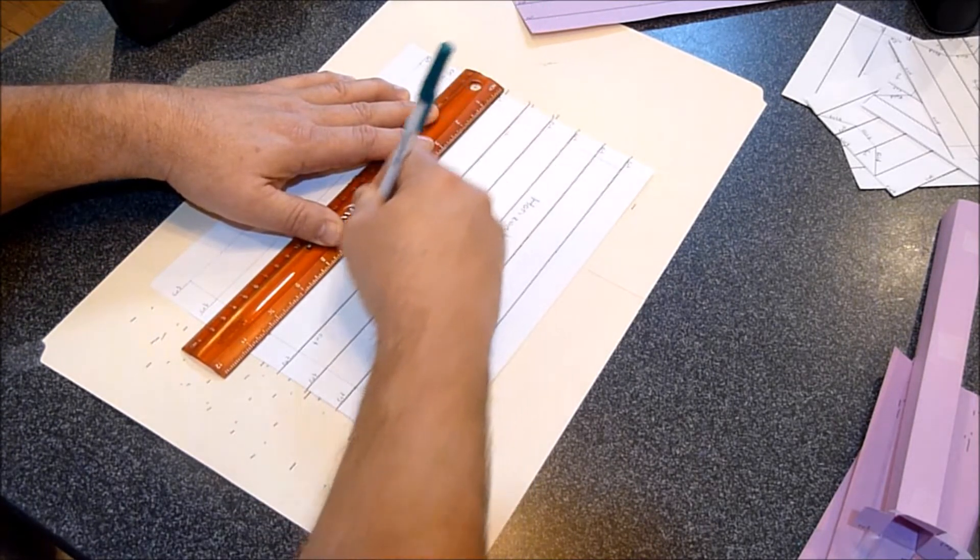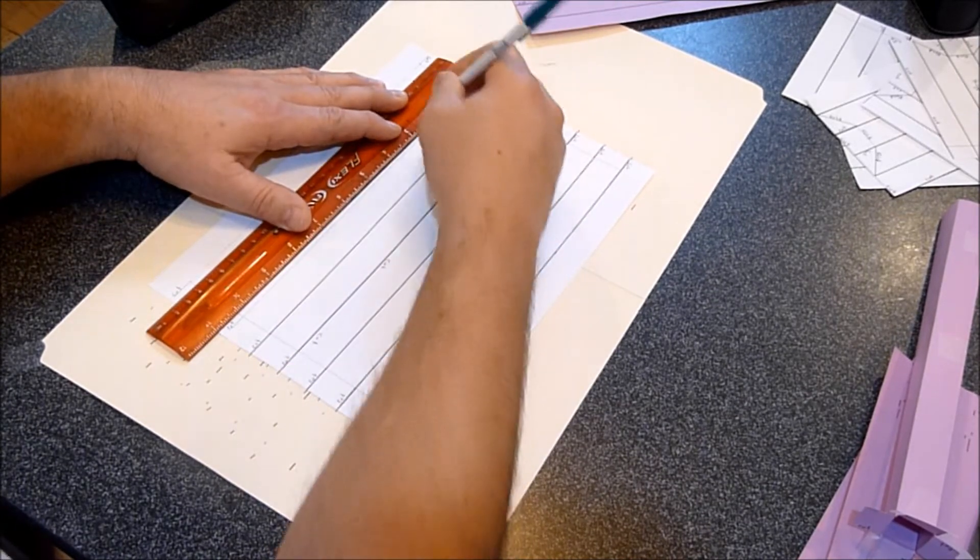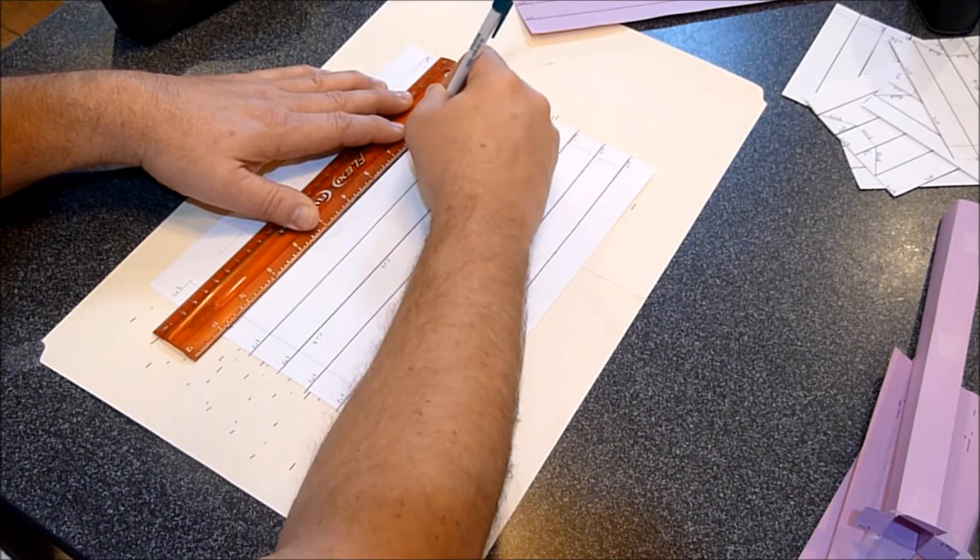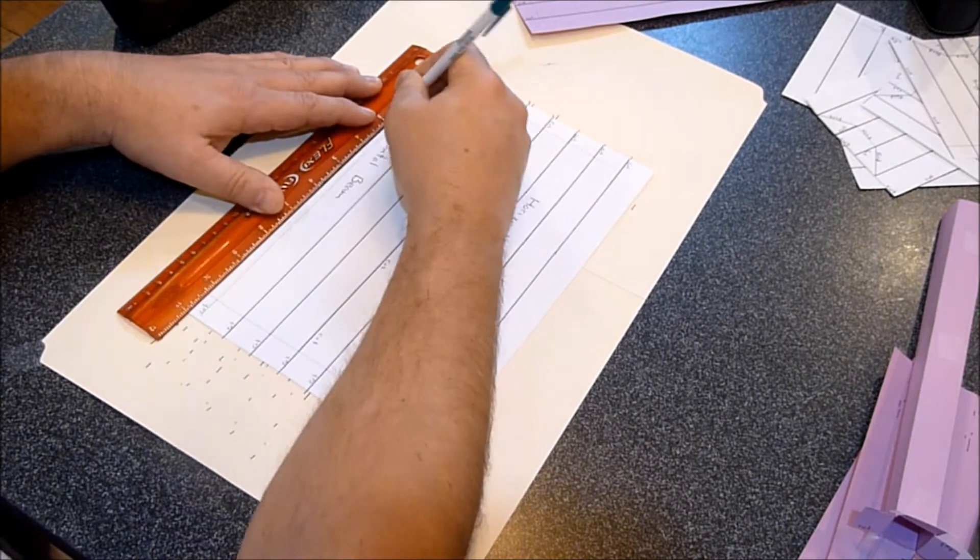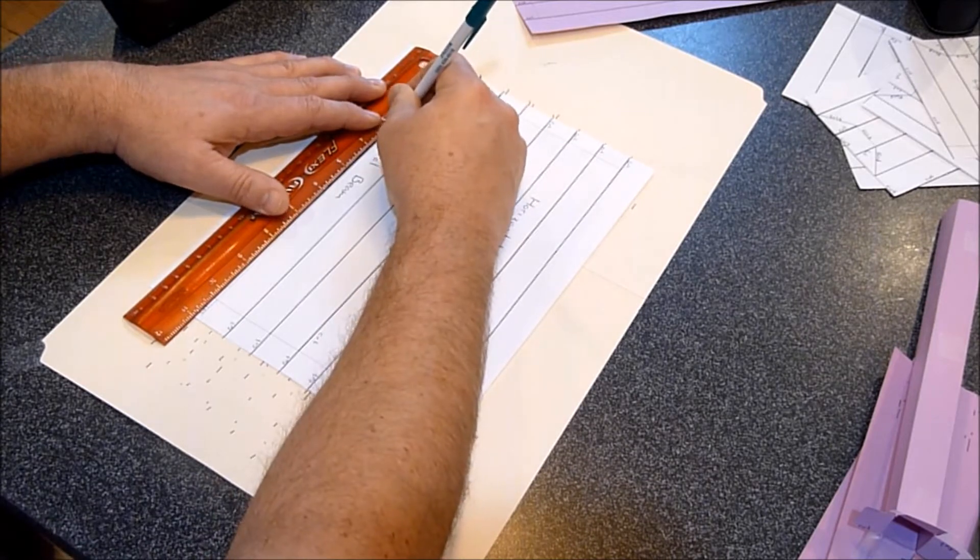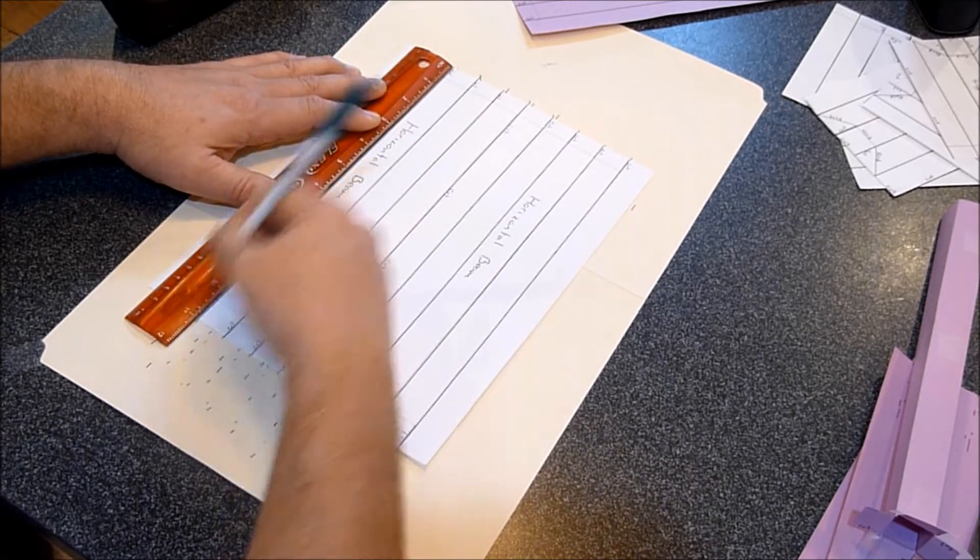For the horizontal beam, you fold and cut on both sides. Remember, I'm putting the pen on the line, then pushing the ruler up against the pen and lining it up.